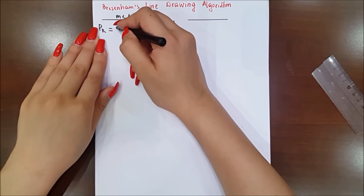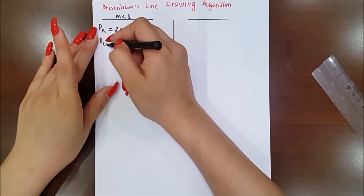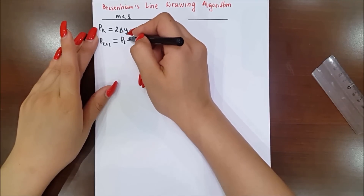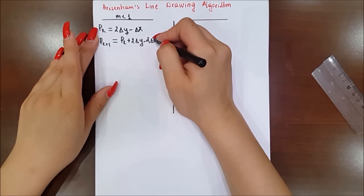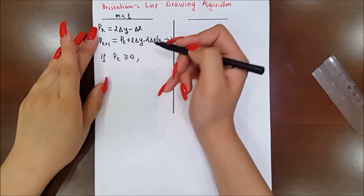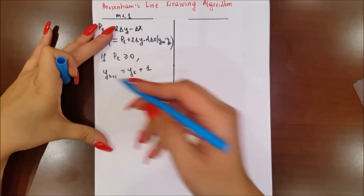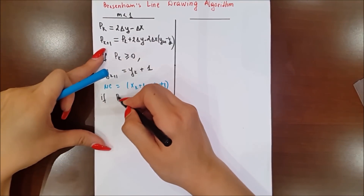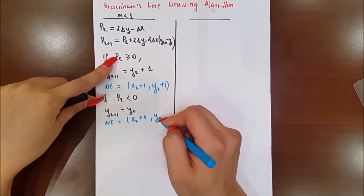Before starting the example, let me remind you the algorithm. Depending on the value of slope, we can get two formulas. Case 1: when slope is less than 1, the initial decision parameter pk will be 2·Δy minus Δx. The next decision parameter pk+1 will be pk plus 2·Δy minus 2·Δx times (yk+1 minus yk). If pk is greater than or equal to 0, the next y coordinate will change by 1, so the next coordinate will be (xk+1, yk+1). If pk is less than 0, then y stays the same and the next coordinate will be (xk+1, yk).